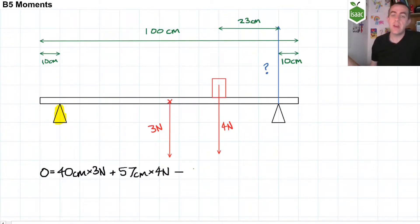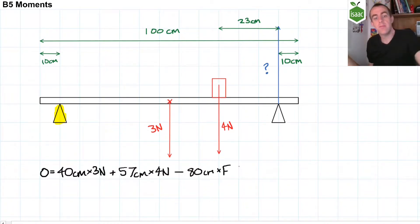And now we have to subtract the anticlockwise moment produced by the right-hand support. That is acting 80 centimetres from the pivot and is some unknown force. There's only one unknown in this equation, so rearranging this equation to get force as the subject gives us 4.35 newtons.